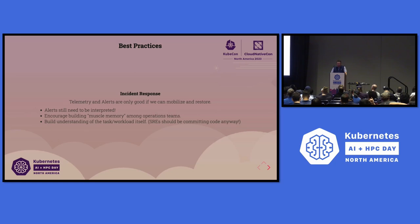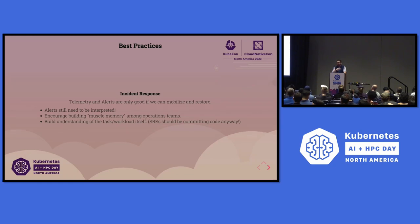Incident response: telemetry and alerts are only good if we can mobilize and restore. Alerts still need to be interpreted — like GPU temperature, I need to know what to do from that. Muscle memory among operations teams is important. Building understanding of the types of tasks and workloads coming into your cluster is like understanding your application. SREs should be committing code anyway — one way to learn is to open a PR and help the team with reliability objectives.